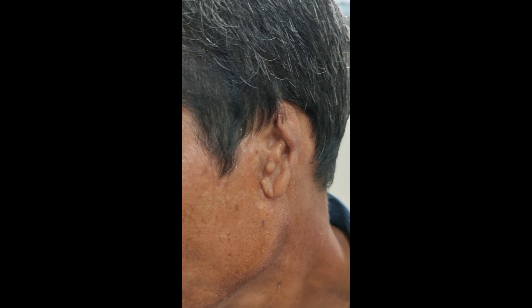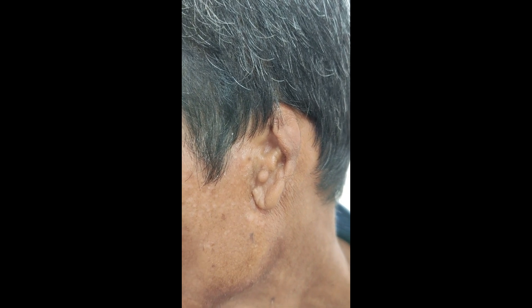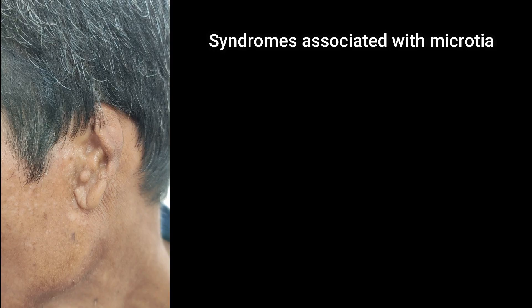This patient came with a congenital anomaly involving the left pinna. The pinna cartilage of the left side is underdeveloped, and the underdeveloped pinna is known as microtia. Now, what are the syndromes that are commonly associated with microtia?